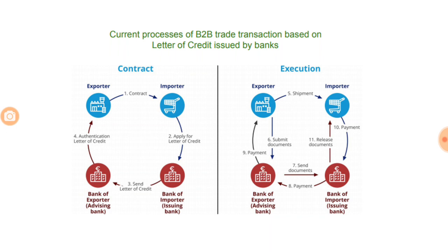Looking at the execution phase: when the shipment goes from exporter to importer, documents of final goods receipt are submitted by the exporter to the exporter's bank. The exporter's bank sends documents to the importer's bank, who releases payment upon verifying these documents, then routes payment to the exporter. After payment is made, release documents are sent from the issuing bank to the importer, who pays the bank first and gets the release documents, indicating the letter of credit is honored from both ends.